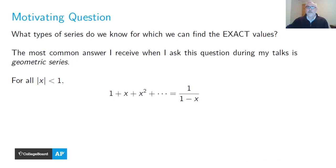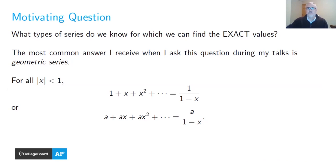Hopefully you've seen the geometric series before. For any real number x where the absolute value of x is less than one, we can take the sum 1 + x + x² + ⋯, which equals exactly 1/(1−x). Sometimes we show the formula with a constant a multiplied through, giving a/(1−x). Because we know this nice closed formula, we have a way to find exact values of geometric series — and it's an important tool for later in this talk.